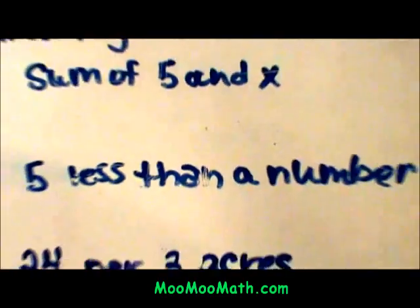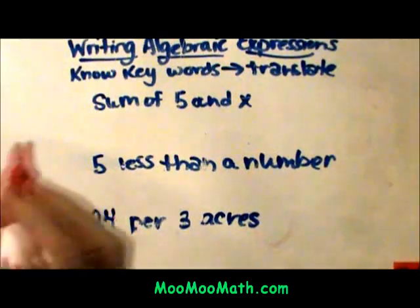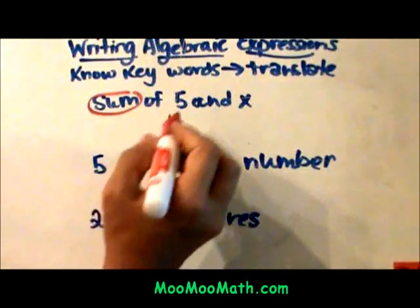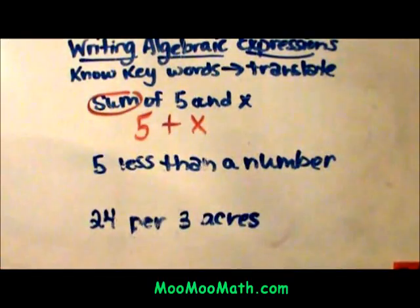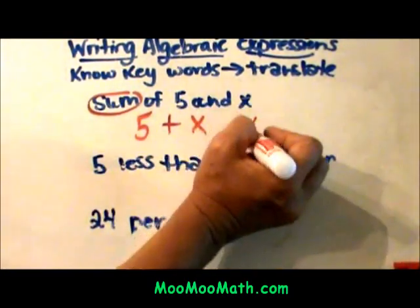I need to zoom back out so you can see this. Okay, here we are. So now we have the sum of five and x. So what's the sum? Well, sum on our keywords is addition. So I know I'm going to add these two together. So I'm just going to add five and x. And order doesn't matter with addition. So I can write it as five plus x or x plus five.